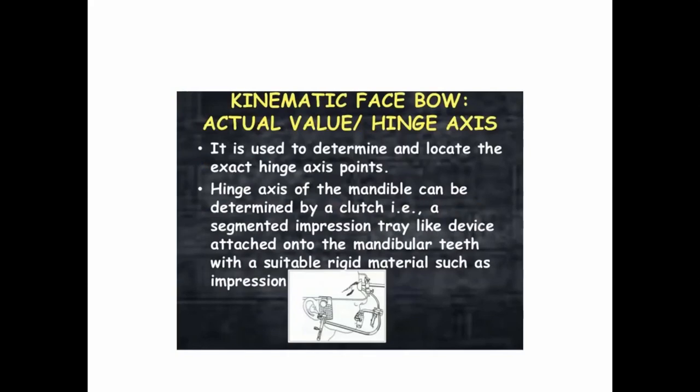Then comes the kinematic facebow, also called the hinge axis or true value facebow. It is used to determine and locate the exact hinge axis points. The true hinge axis of the mandible can be determined by a clutch — a segmented impression tray-like device which is attached to the mandibular teeth. In kinematic facebow, a clutch is fabricated and attached to the mandibular teeth using a suitable rigid material such as impression compound.